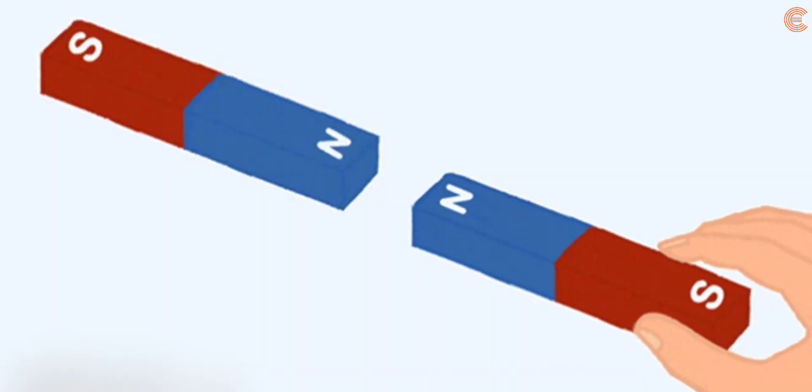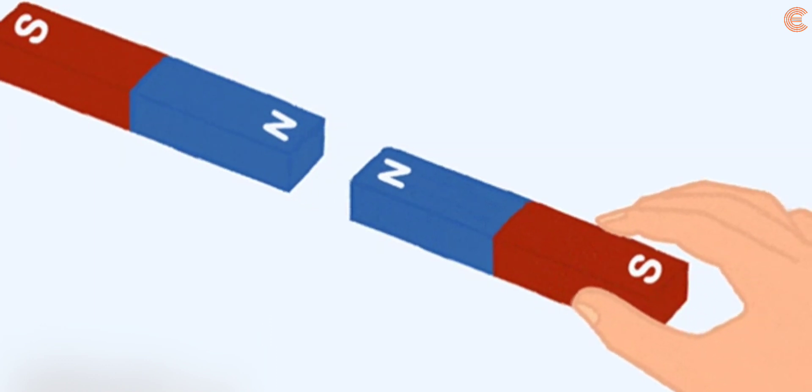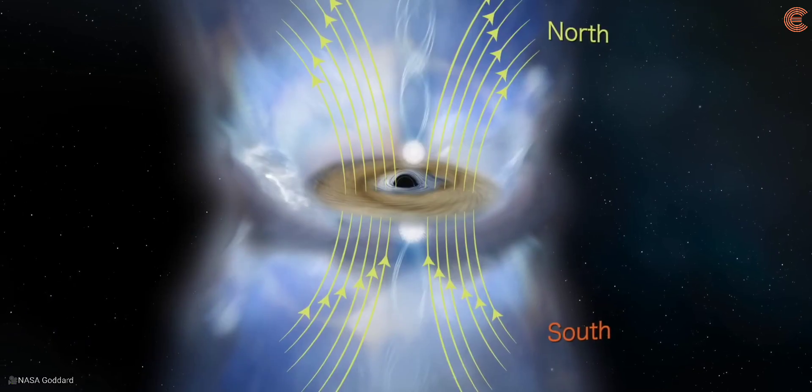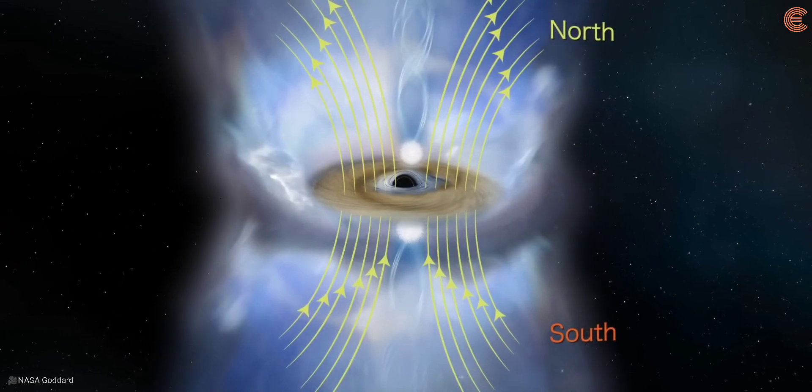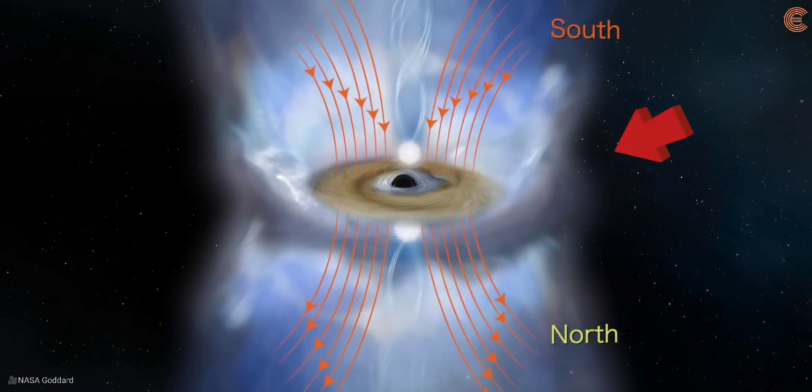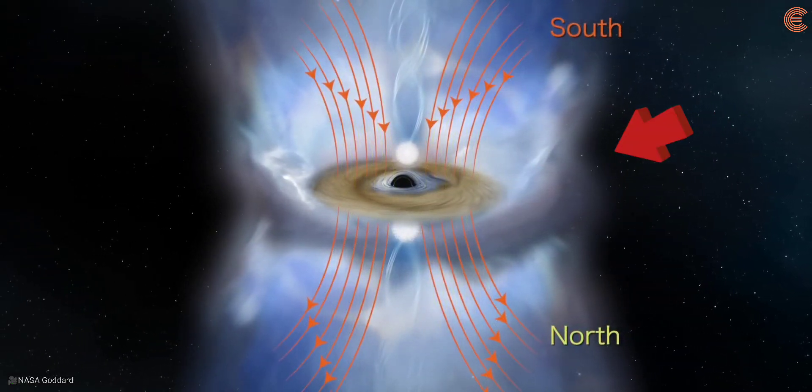In basic terms, a magnetic field can be imaged as that of a simple magnet with a north and south pole. A magnetic reversal is where the orientation of that imaginary pole flips and the orientation of the magnetic field flips.